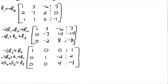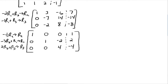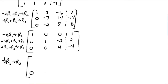Now we're done with the second column — two-thirds of the way done. Go to the next column and get a one where you want it, following this diagonal, right where the four is. So one-fourth times row three gives a new row three: zero, zero, one, negative one.